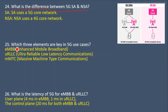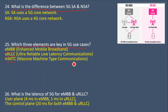Next question: Which three elements are key in 5G use cases? These are introduced in 5G only. First is eMBB — Enhanced Mobile Broadband. Second is URLLC — Ultra-Reliable Low Latency Communications. Third is mMTC — Massive Machine Type Communication. These are the three key elements of 5G use cases.